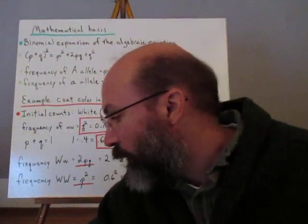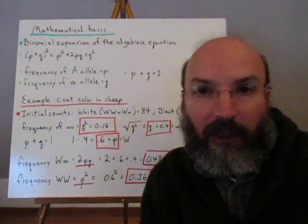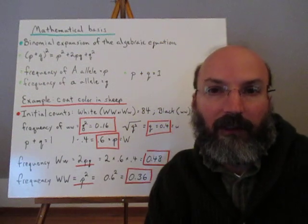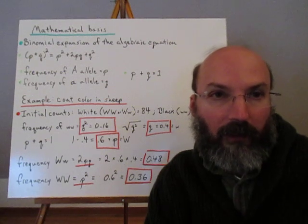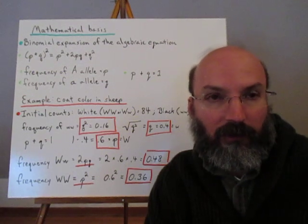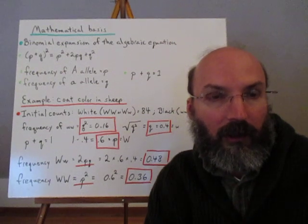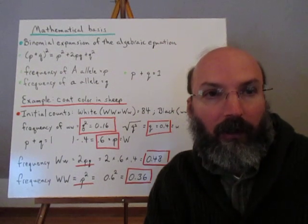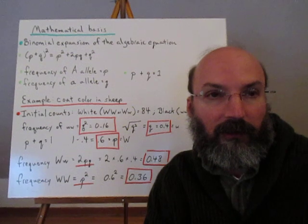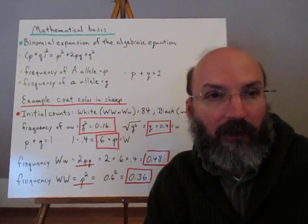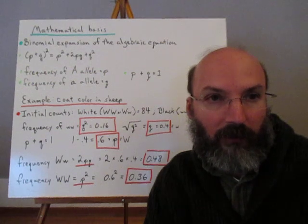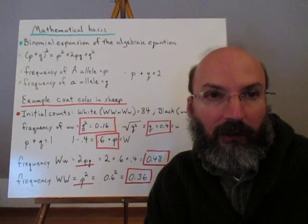The mathematical basis for the Hardy-Weinberg equilibrium is a binomial expansion, and the binomial expansion of (p + q)² equals p² + 2pq + q², where p is the dominant allele — represented by an uppercase letter in convention — and q is the recessive allele, represented by a lowercase letter.